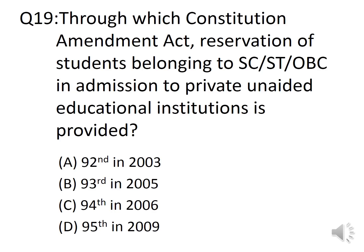Question 19: Through which Constitution Amendment Act is reservation of students belonging to SC, ST, and OBC in admission to private unaided educational institutions provided? Options: A. 92nd in 2003, B. 93rd in 2005, C. 94th in 2006, D. 95th in 2009. The correct answer is Option B, the 93rd Amendment in 2005.